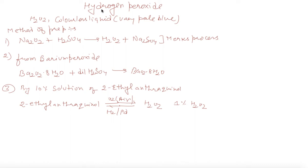My dear students, now hydrogen peroxide, another compound of hydrogen, that is H2O2, colorless liquid, it is a very pale blue. Its method of preparation, number one is Mox process, when sodium peroxide is reacted with H2SO4, 20% dilute ice cold solution.